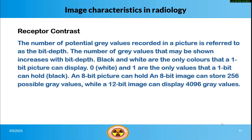The number of potential gray values recorded in a picture is referred to as the bit depth. The number of gray values that may be shown increases with bit depth. A 1-bit picture can display only black and white, holding values of 0 (white) and 1 (black). An 8-bit image can store 256 possible gray values, while a 12-bit image can display 4096 gray values.